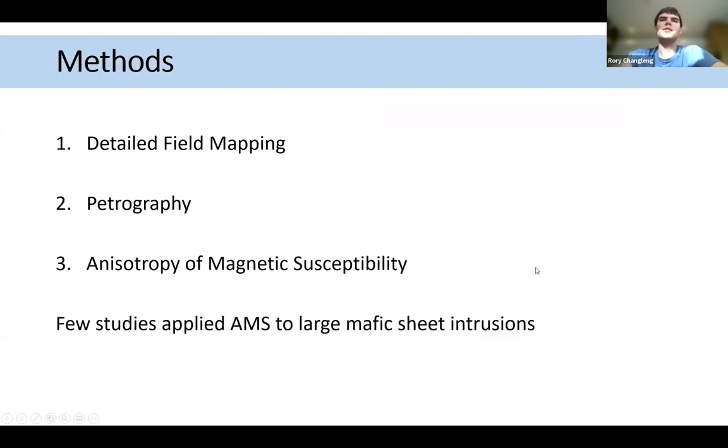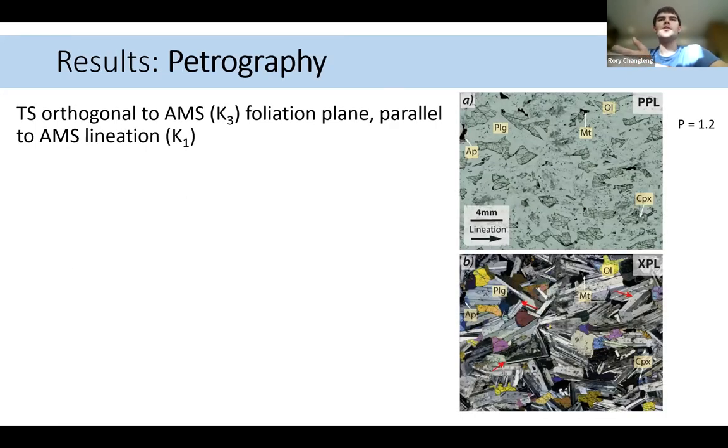So the methods we use to address this, we first did detailed field mapping in 2019, took samples, performed petrography on those, and then we took 41 samples for AMS, anisotropy of magnetic susceptibility. And this is one of the few studies, interestingly, to use AMS and apply it to large mafic sheet intrusions.